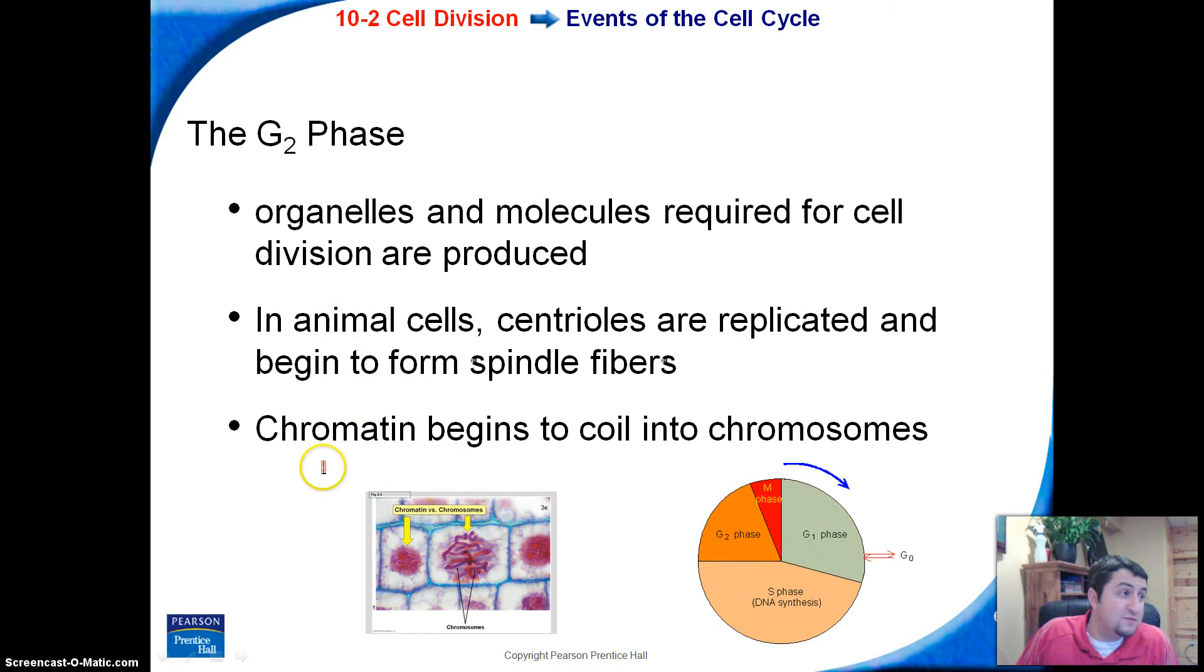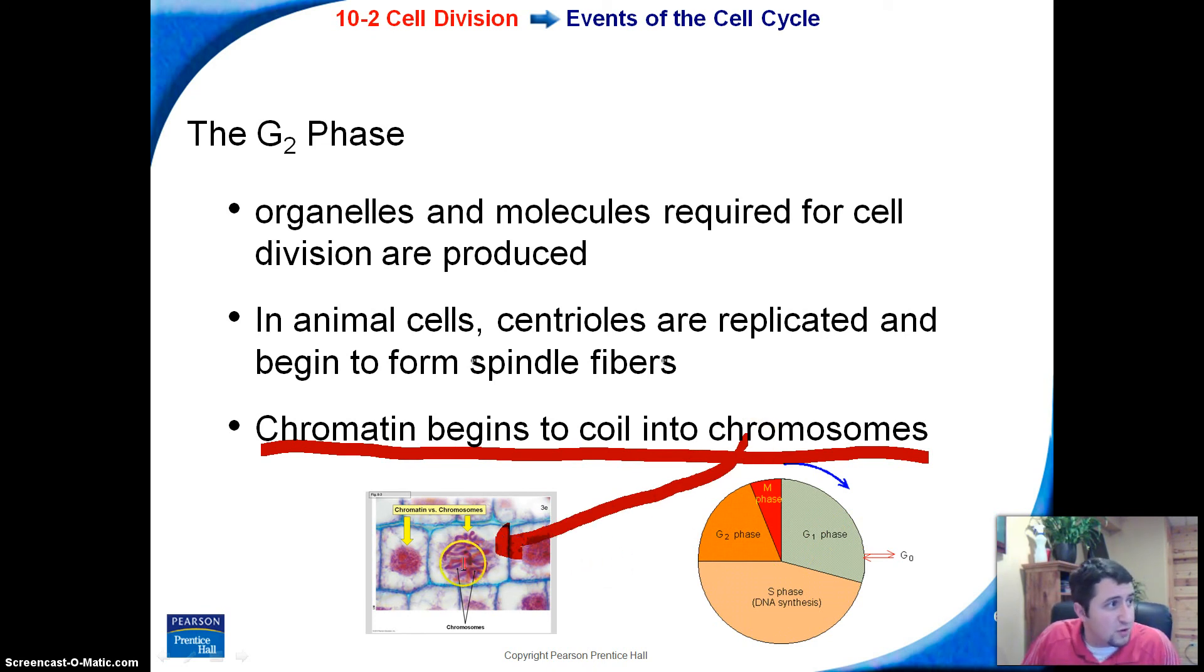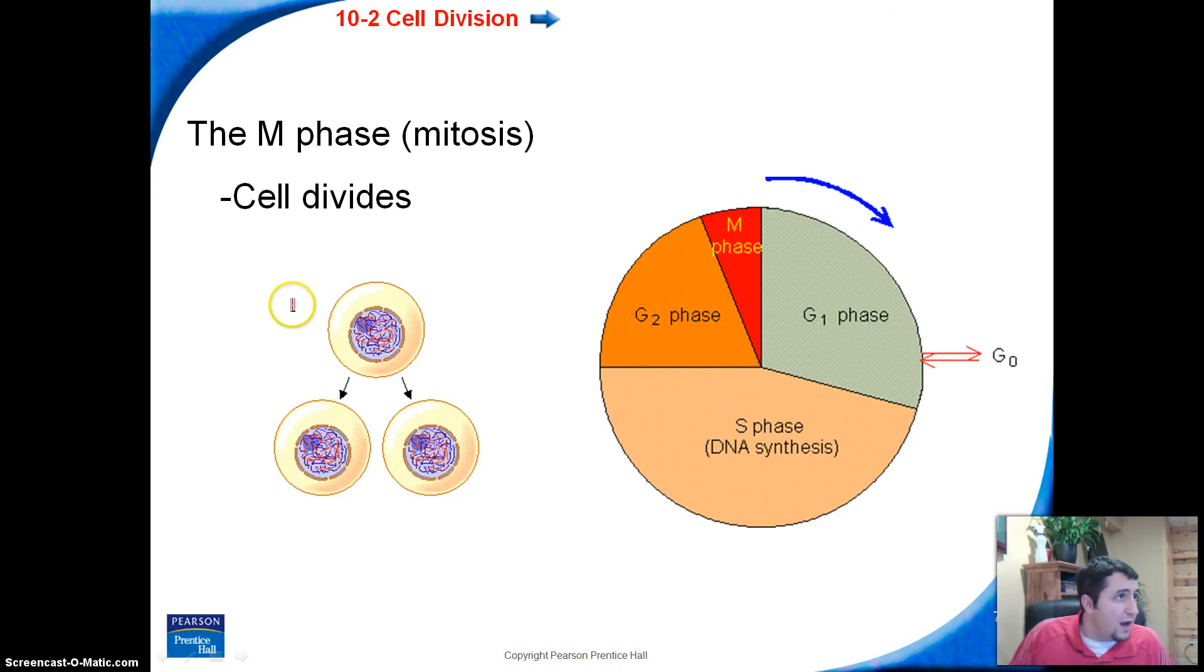And also an important thing to know in this phase, chromatin begins to coil and it forms chromosomes. So actually in this phase we can actually see chromosomes. Right down here on this plant cell to the right here, those are chromosomes. You can actually see the DNA in there. This guy right here, this is still chromatin. We can't actually see the DNA yet.